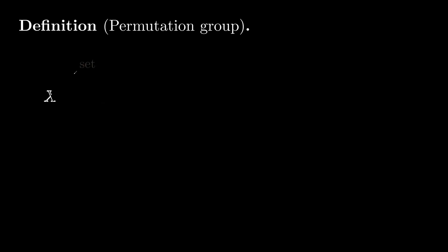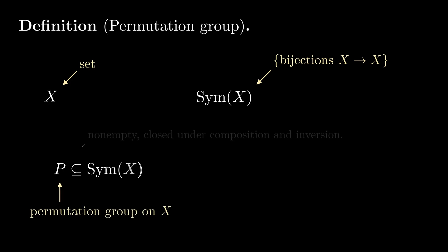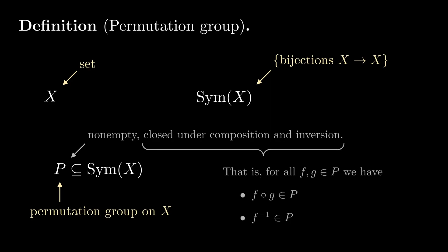With this, we're ready to define permutation groups. Let x be a set, and let Sym(x) denote the set of bijections from x to itself. A permutation group on x is a non-empty subset p of Sym(x) which is closed under composition and inversion. That is, for all functions f and g in p, the composition of f and g and the inverse of f are both in p.